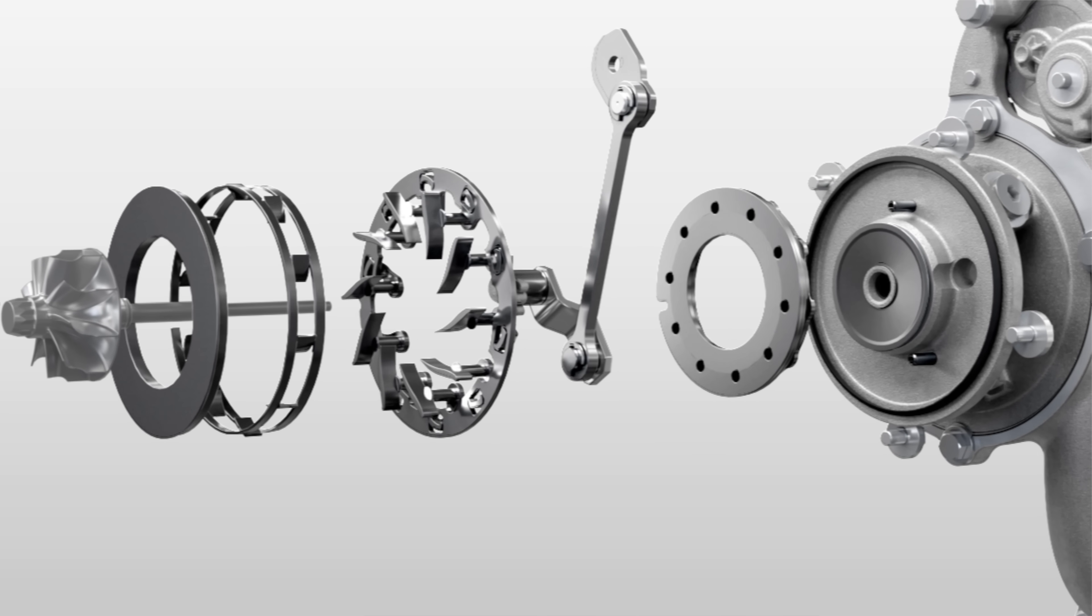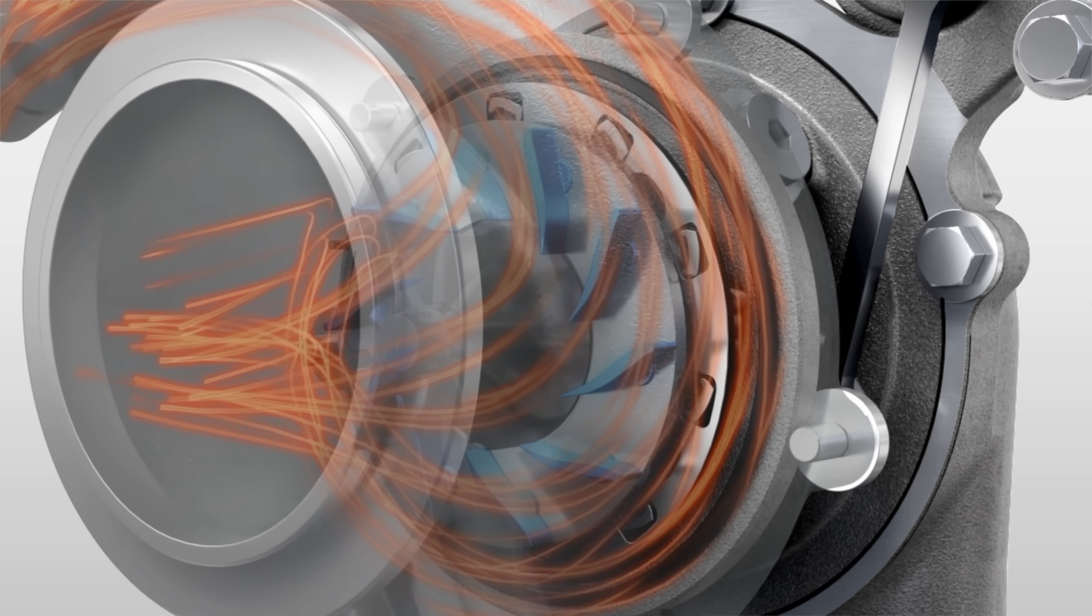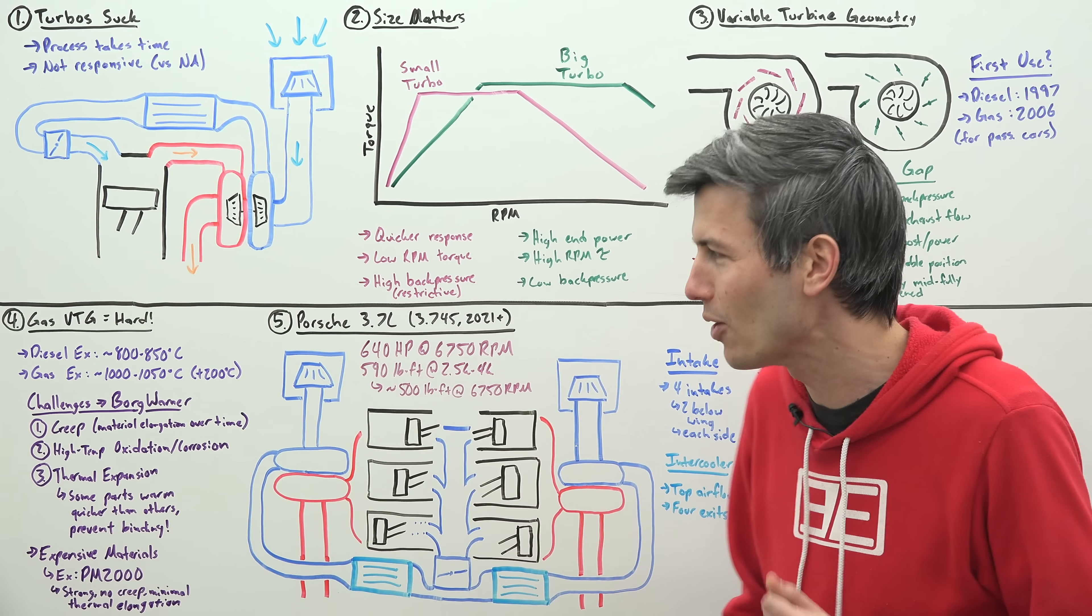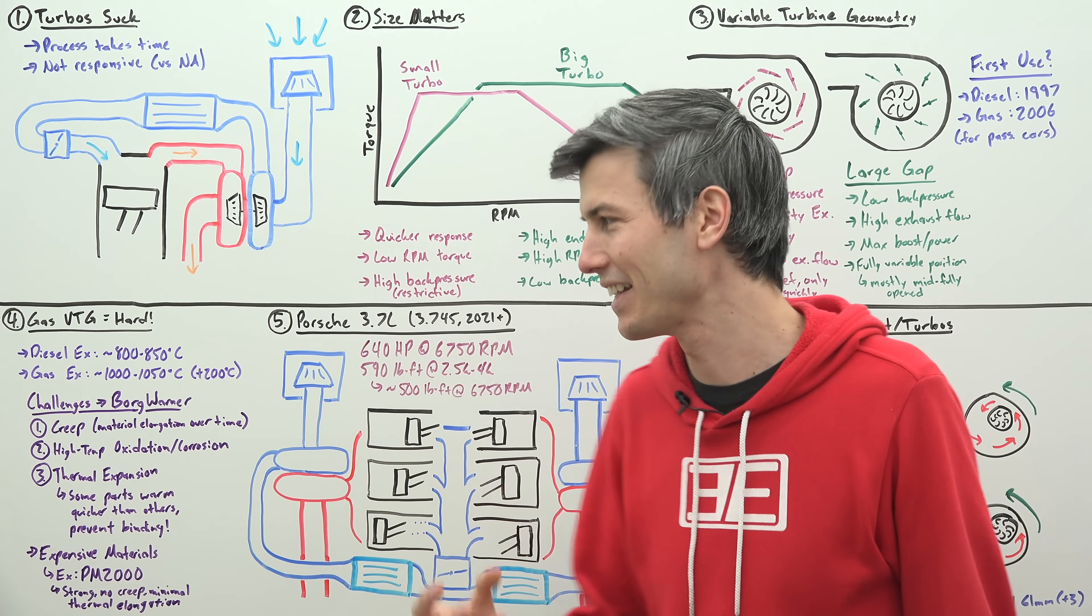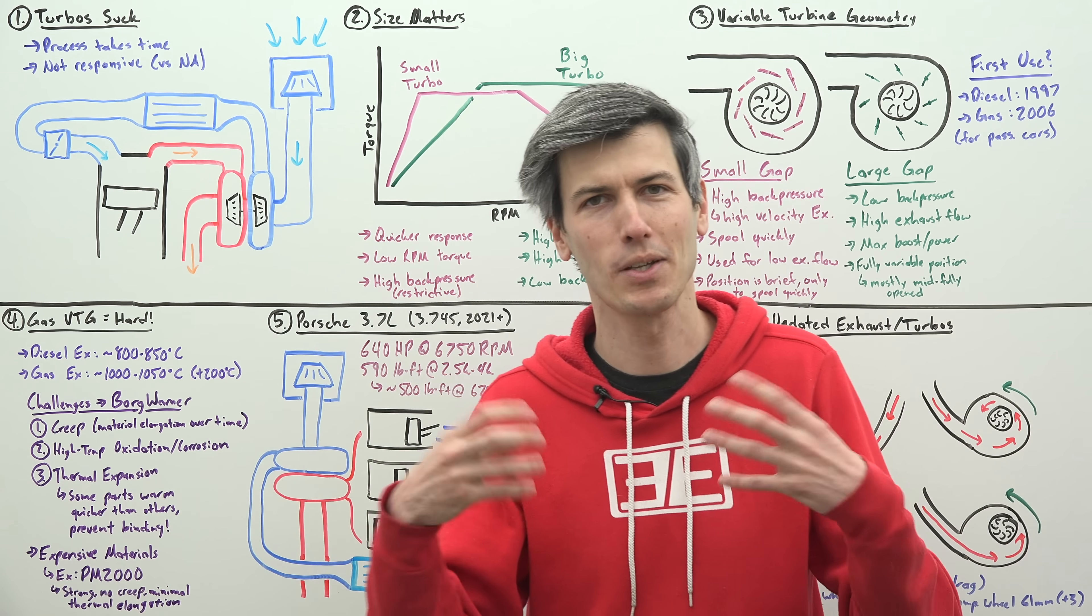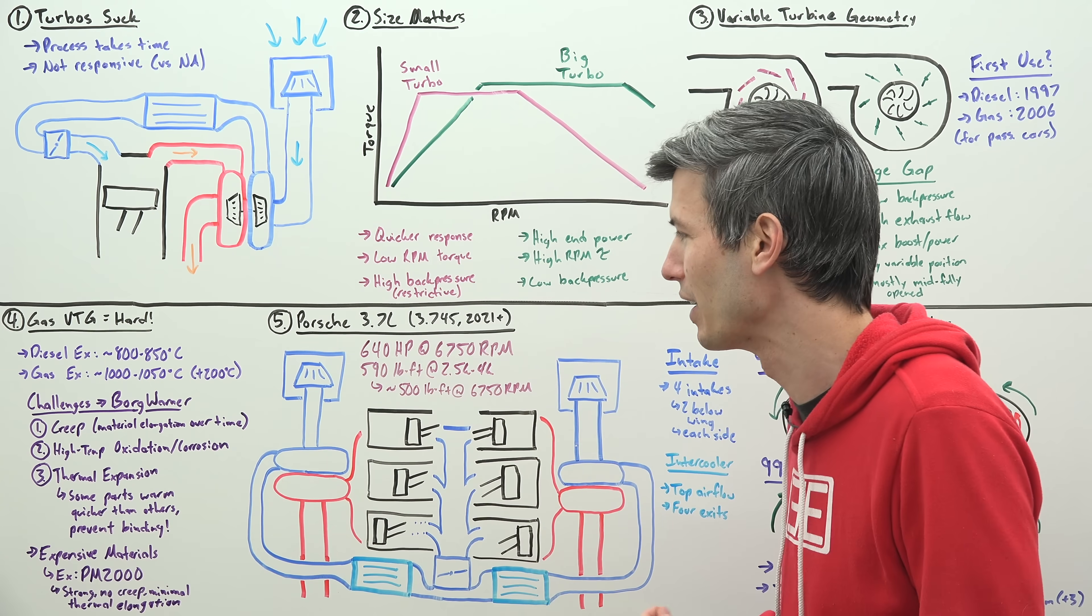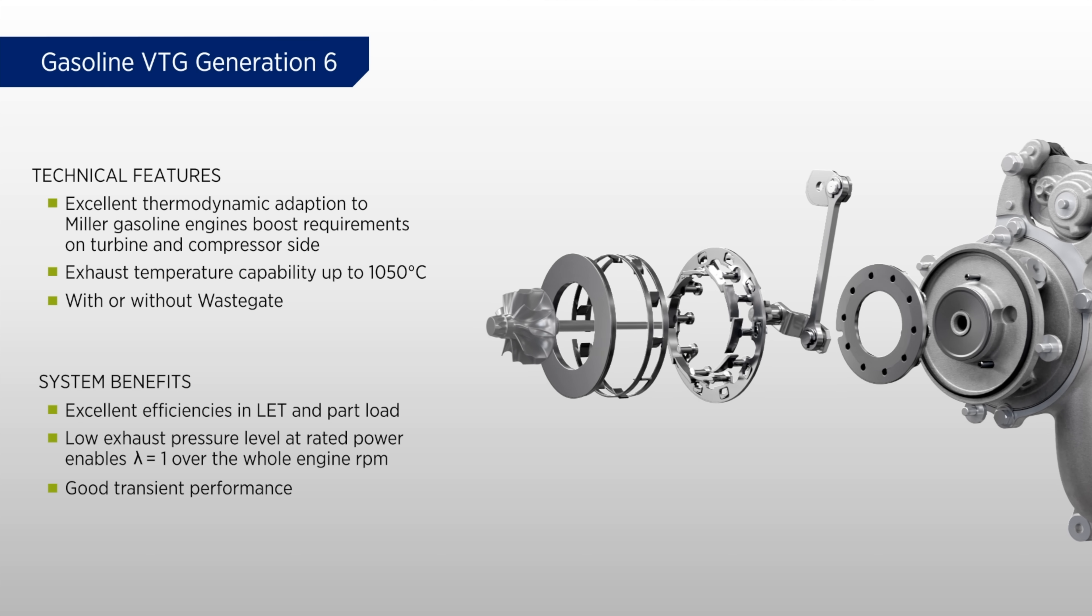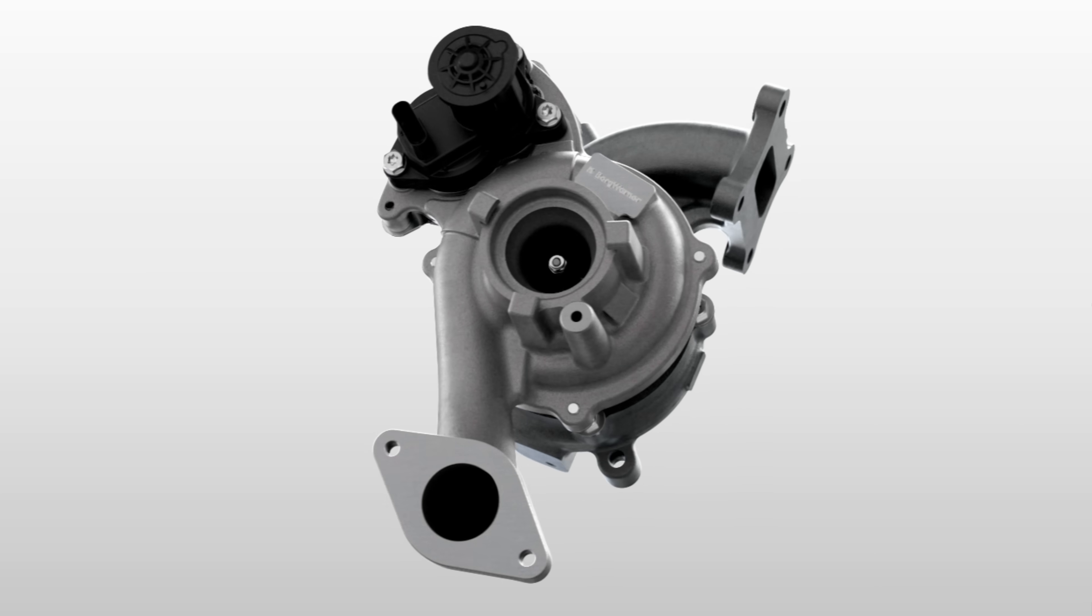Finally, you have thermal expansion. You have these really small parts and larger parts, and some of these parts warm up quicker than others, so you need to make sure that no binding occurs within it. One interesting thing BorgWarner said was that the soot in diesel exhaust actually acts like a lubricant. You don't want too much, but some of that diesel soot actually acts like a lubricant for this variable turbine geometry, so there's a benefit there.